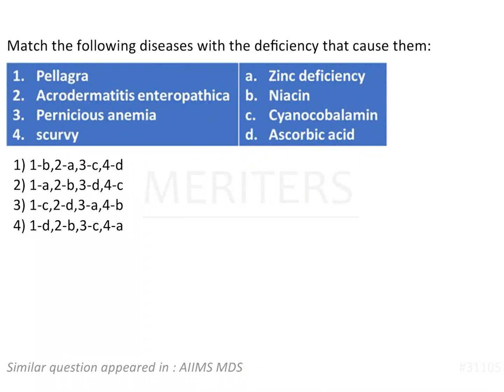This is a match-the-following type of question. Here we have to match the diseases with the substance that is deficient in it. The substances mentioned include zinc, niacin, cyanocobalamin, and ascorbic acid. Zinc is a mineral, niacin is vitamin B3, cyanocobalamin is vitamin B12, and ascorbic acid is vitamin C. Now let's see them one by one.